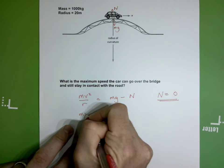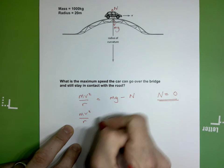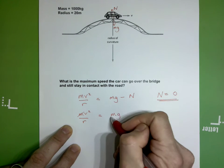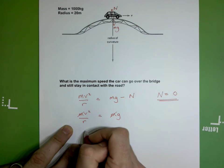So now my equation becomes mv squared over r equals mg. You'll find it's quite interesting - the mass of the car is irrelevant, it doesn't matter what mass the car is.